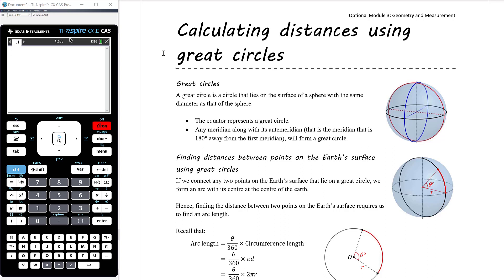The equator would have that same radius and diameter as the sphere itself. The same would be true for lines of longitude. The prime meridian and the anti-meridian together form one complete circle with the same radius as the sphere — the longest possible distance around it. This is true for any meridian and its anti-meridian, so any such pair forms a great circle. A great circle is a circle that has the same radius and diameter as the sphere itself.